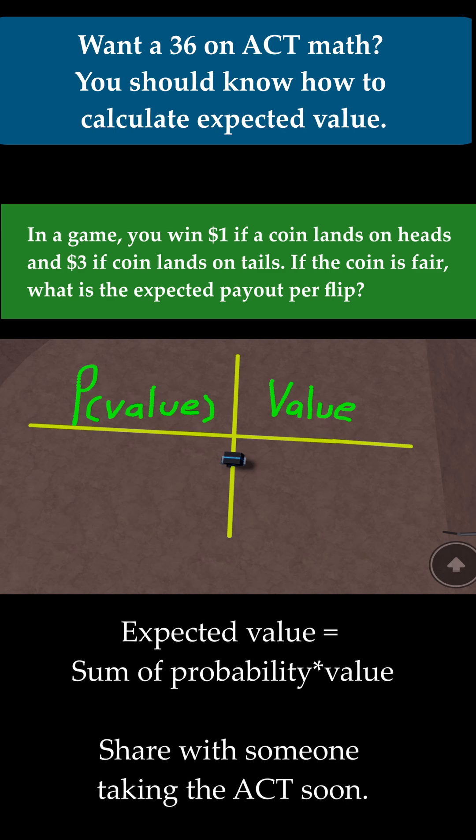So this is an expected value problem. And how do you calculate the expected value? What you do is you take each value and you multiply it by its probability. And then when you're done with that, you add up all the results you get.